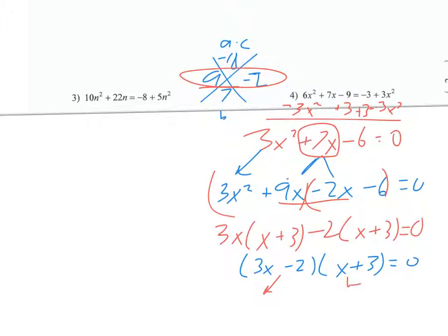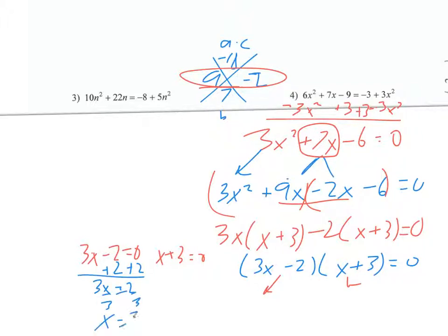Now I split these up and set each factor equal to zero. From three X minus two equals zero, I add two and divide by three to get X equals two over three. From X plus three equals zero, I subtract three to get X equals negative three.